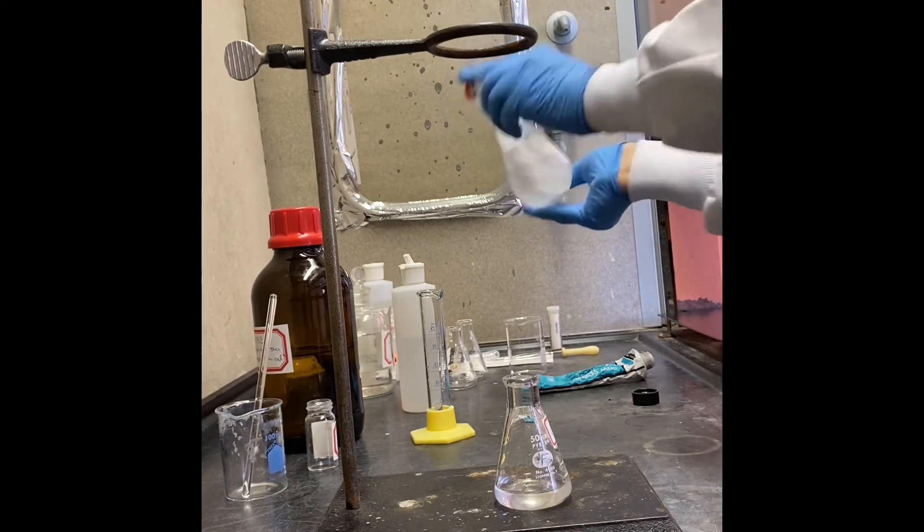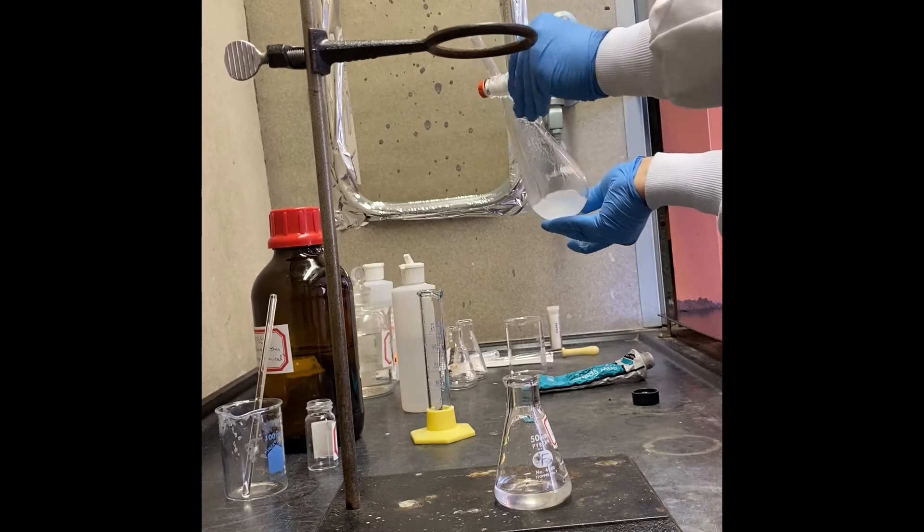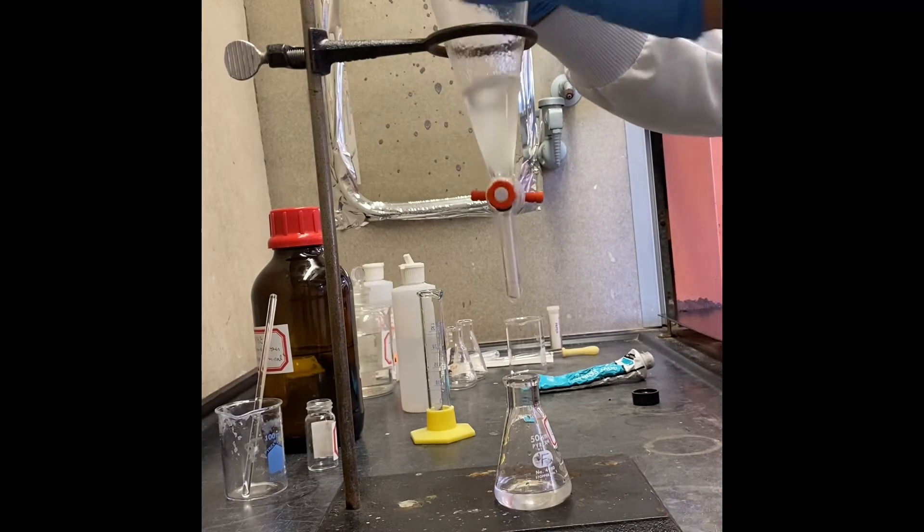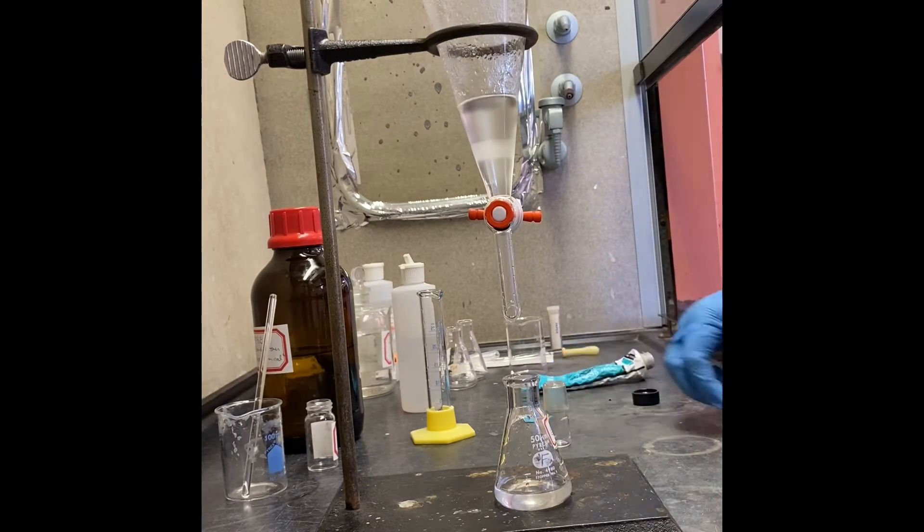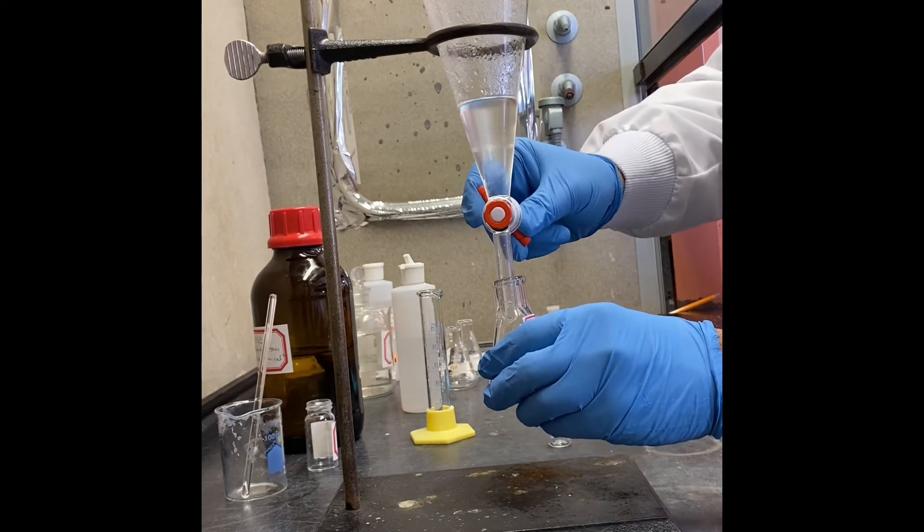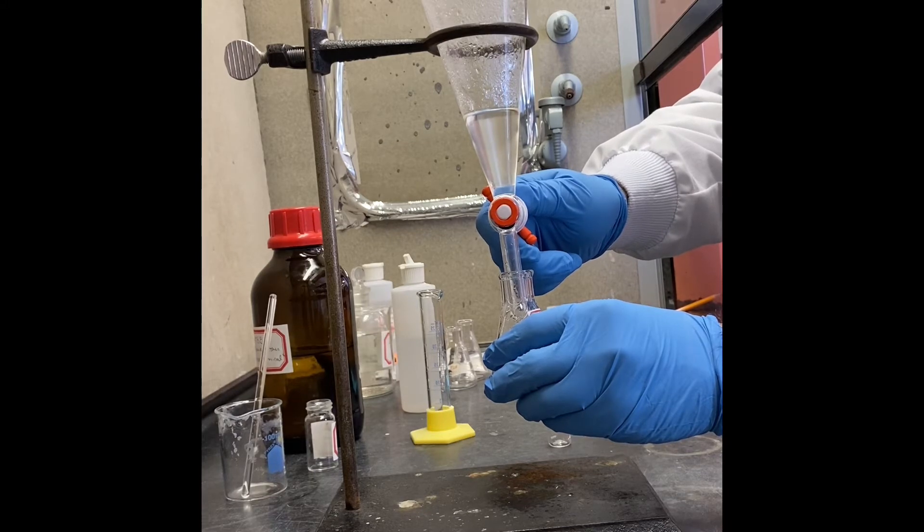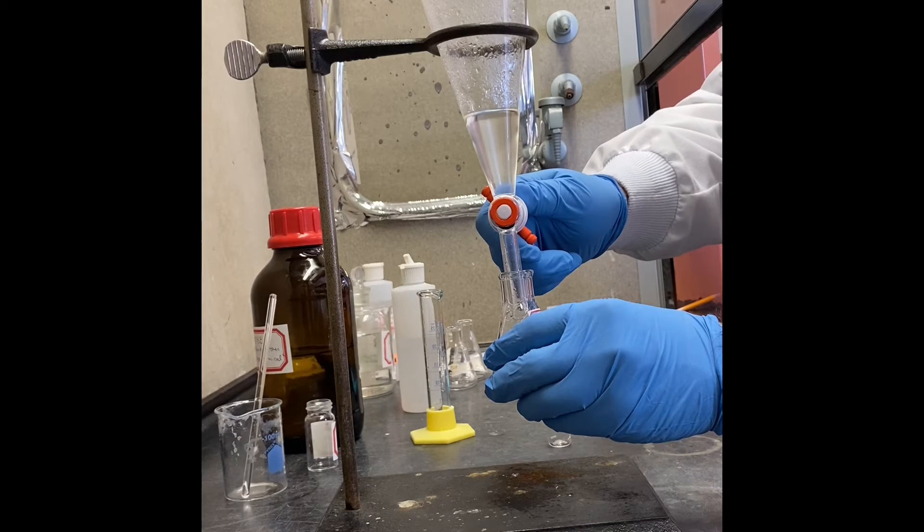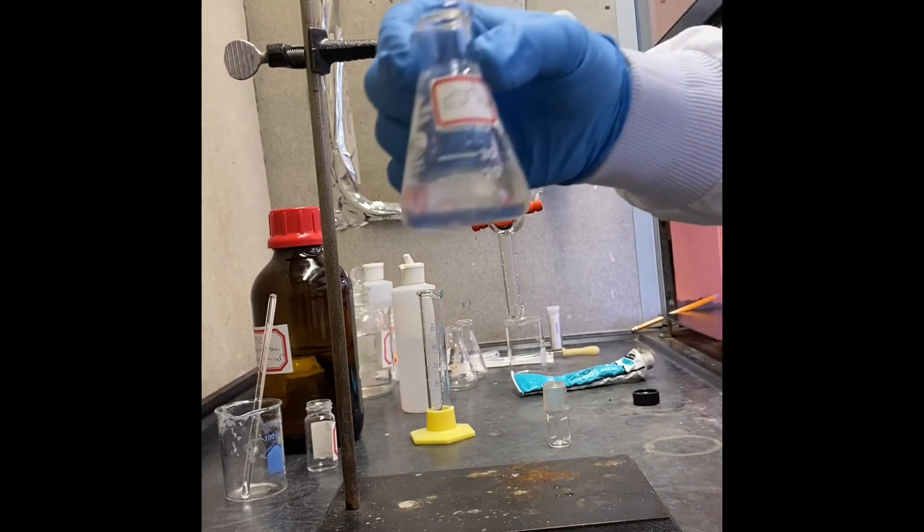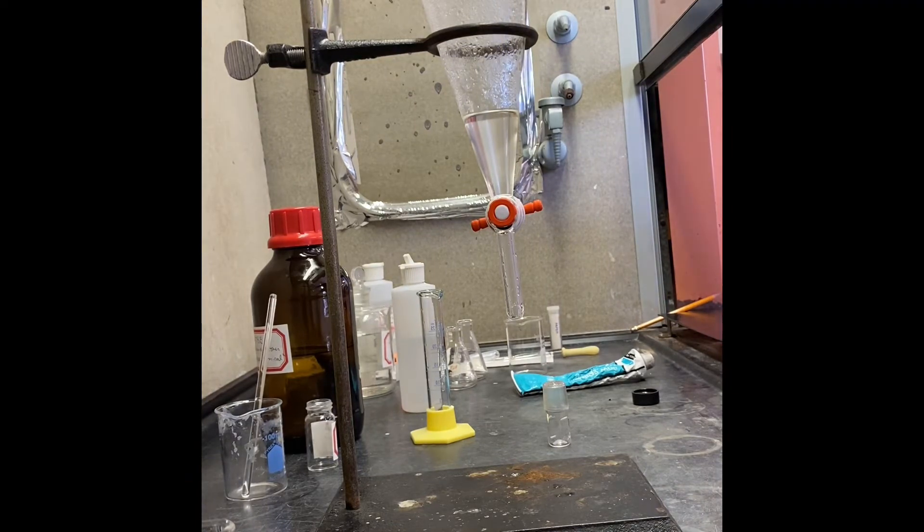Now we're going to take the bottom layer out and then we'll wash them one more time. The top layer which is organic, MTBE, now is going to include just two of the compounds we had in the mixture. This is my first compound but it is a salt so we have to neutralize that.